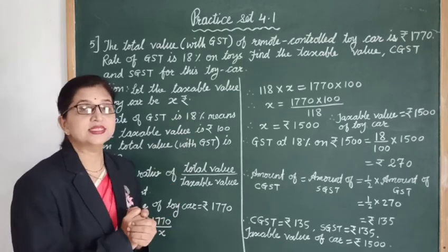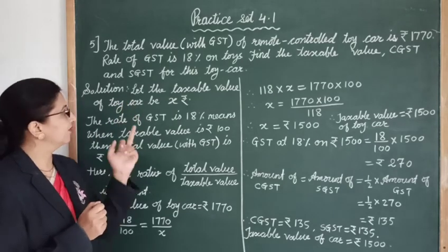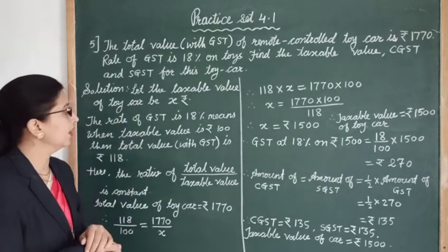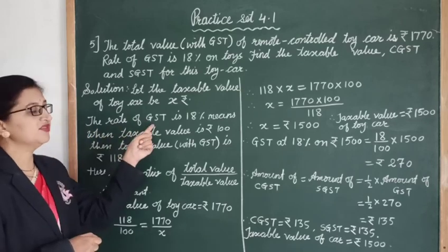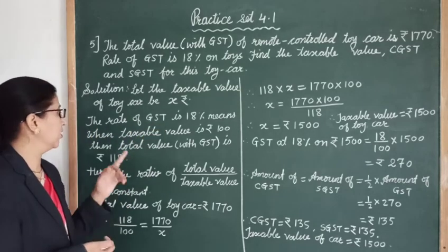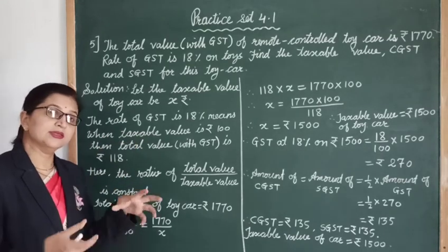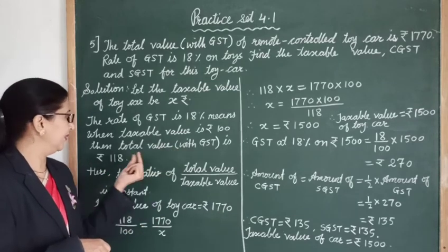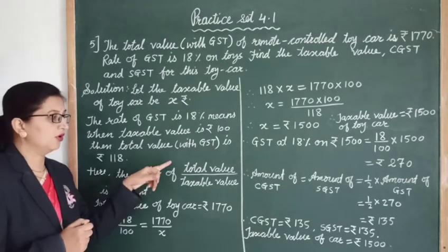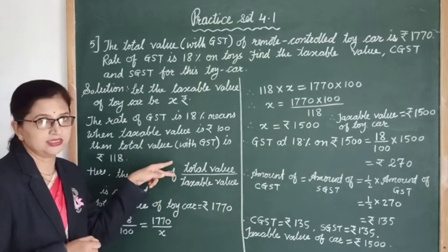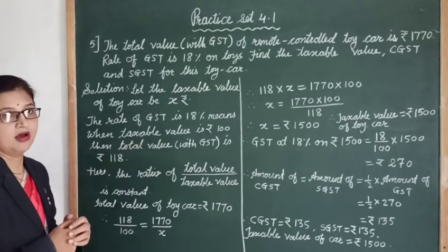We need to find CGST and SGST. Let the taxable value of the car be x rupees. The GST on toys is 18%, which means when the taxable value is 100 rupees, the total value after adding GST is 118 rupees. Since this ratio of total value to taxable value is constant, we can use it to find the value of the car.